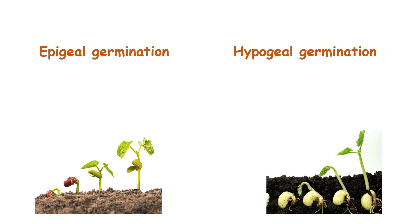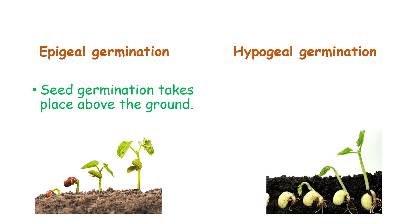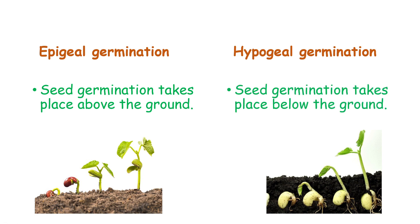First, we will see what epigeal germination is. It is the seed germination that takes place above the ground — you can see in this picture that the seed germination takes place above the soil surface. In hypogeal germination, the seed germination takes place below the ground, below the soil surface.